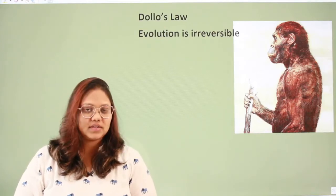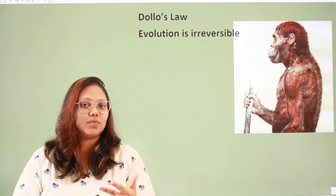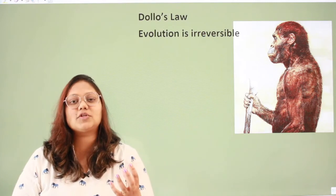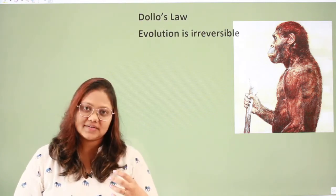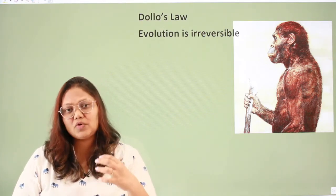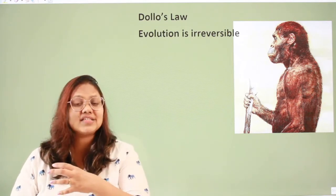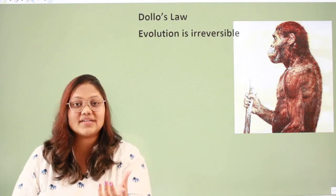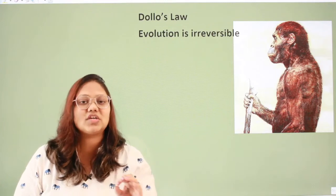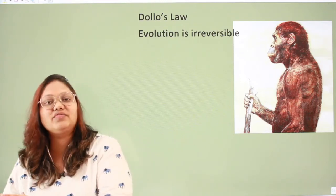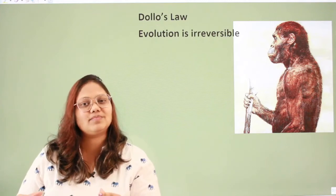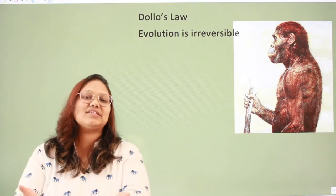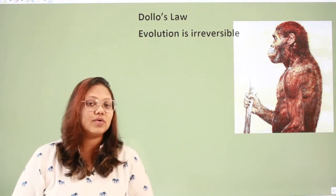So we saw the Australopithecus, then Homo erectus, and today Homo sapiens. This tells us that a multitude of factors are responsible for evolution. If today the atmosphere were changed back to the time period of the Australopithecus, the Neanderthals, or Homo erectus, we as Homo sapiens would not revert. An organism that has already evolved will not go back to its original form. Hence, evolution is irreversible — which is exactly what Dollo's Law states.